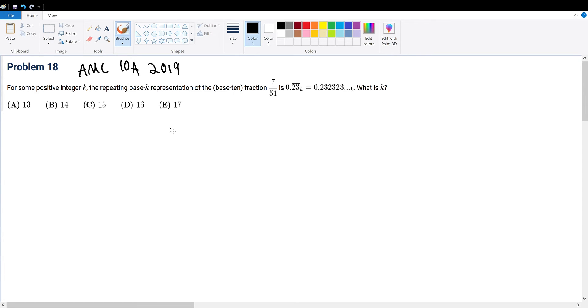AMC 10A 2019, problem 18. For some positive integer k, we have 0.23 repeating decimal in base k, which is the same thing as 7/51 as its base 10 fraction representation. So we're trying to find what base this is.